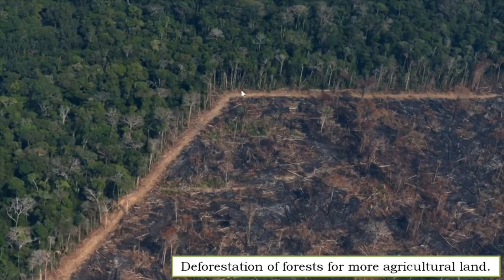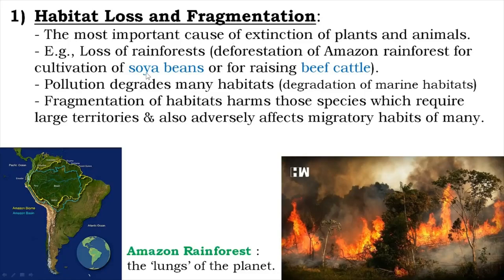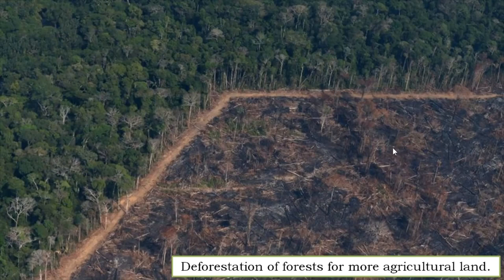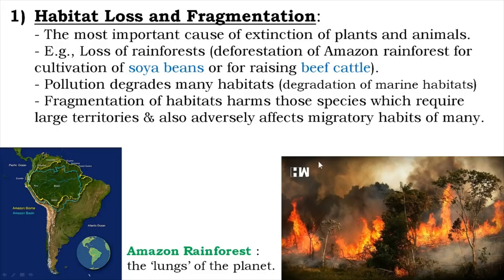A large portion of the Amazonian rainforest is cut down daily in order to make land available for agricultural purposes — for growing important commercial crops like soya beans and also for raising cattle for beef. Recently, the Amazon rainforest has also been facing the threat of forest fires, with large portions burning down, affecting the earth's climate. Apart from habitat loss, animals and plants are also facing the problem of degradation of their habitats due to pollution. Marine habitats are getting polluted, and the organisms living in them are facing the risk of going extinct.